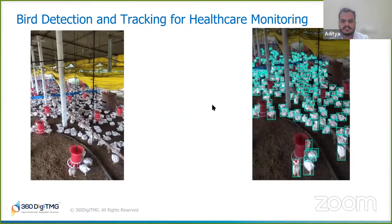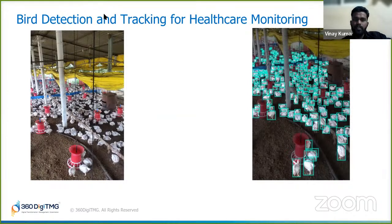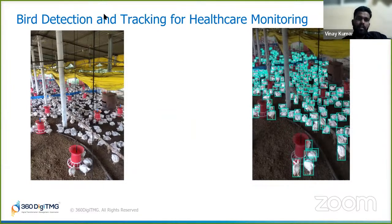This is the detection being done. On the left side image, you have the chicks — these are 26-day-old chicks. On the right side is the annotated output. Once training is complete, the model detects each chick with a bounding box, the same way we did during annotation. After training, we get these bounding boxes as the detection output.